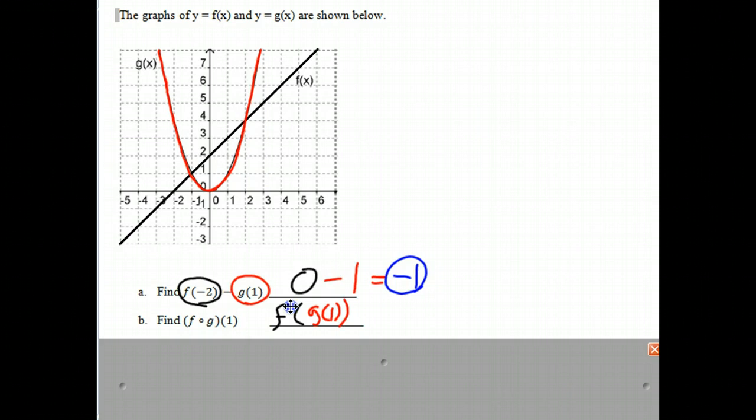Keeping the color coding, the function f is black and the g function is red. If we evaluate g(1), which we actually did in the previous example, we notice that g(1), when x is 1, g is also 1. The value of y is 1. So therefore, this becomes f(1).